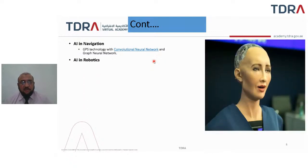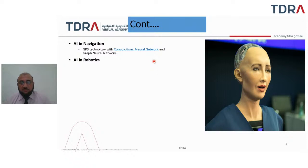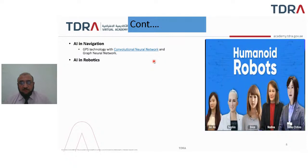Then we have AI in robotics. Here you see the robot Sophia, which has been given the nationality of the Kingdom of Saudi Arabia because of its interaction with humans and its responses to them. These are humanized robots — they look like humans, their body structures are made to resemble humans, and they also interact with humans by giving different replies and gestures.